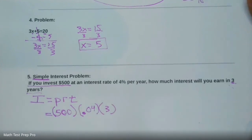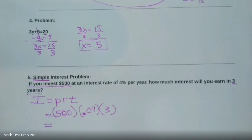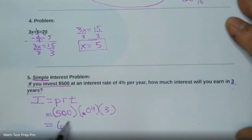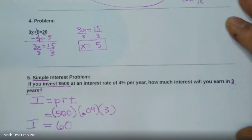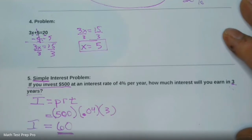It's important to note that the time is going to be in terms of years. Let's do some math: 500 times 0.04 times 3 equals 60. So the interest — to answer the question: if you invest $500 at an interest rate of 4% per year, how much interest will you earn in three years? It's going to be $60.